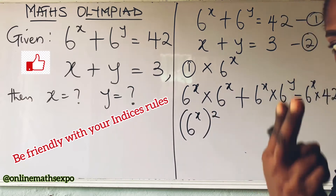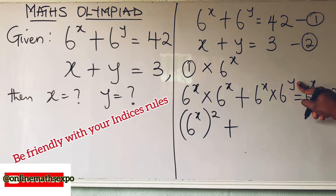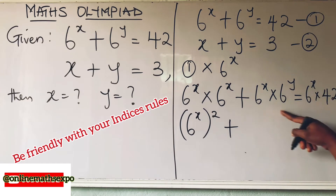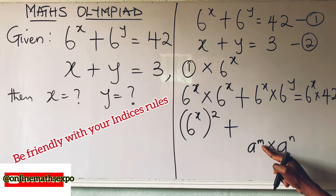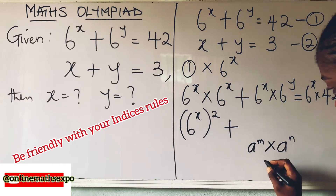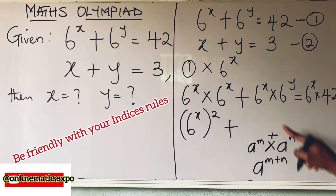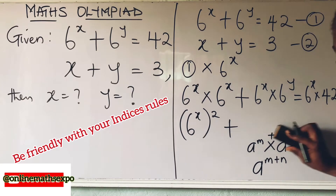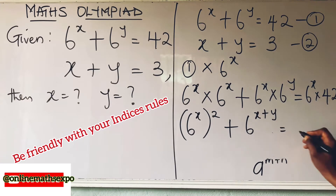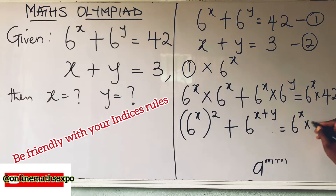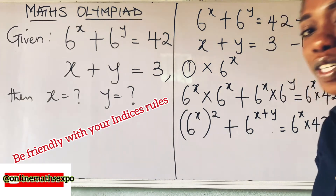For the second term, the variables are different, so we apply the rule: a raised to power m multiplied by a raised to power n equals a raised to power m plus n. So we get 6 to the power of x plus y, which equals 6 to the power of x multiplied by 42. We can call this equation 3.